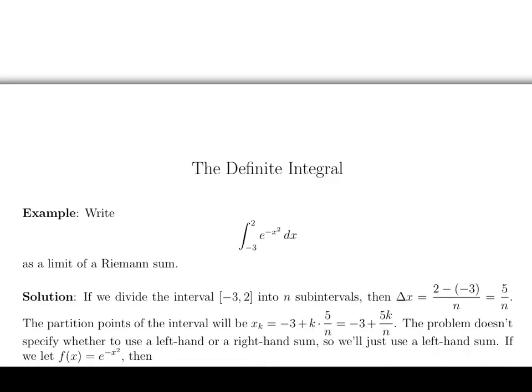So the next thing we'll do is write down what the partition points are. The partition points will be negative 3 plus k times 5 over n. Whenever we write down partition points, it's always going to be a plus k times delta x because we want to start at the left endpoint and then we want to move over by units of delta x.